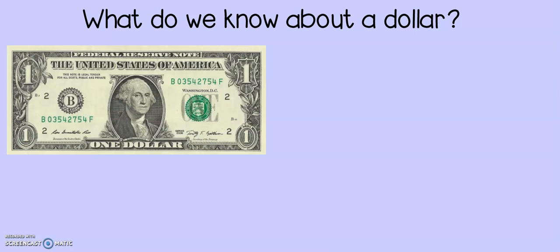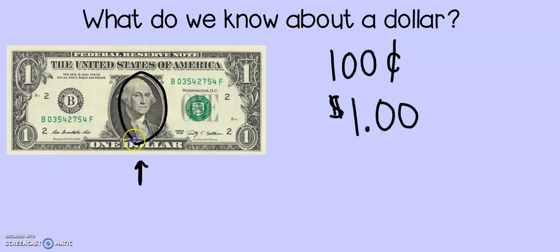Here's some information that we already know about the dollar. Just like we said, a dollar is worth one hundred cents. We also can write it as one dollar with the dollar sign and the decimal. Just like with our quarters, our dollar also shows George Washington. He is on the quarter and the one dollar bill.